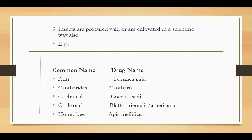Insects are procured from the wild or cultivated in scientific ways. Common name and drug name: Ants — drug name Formica rufa; Cantharis — drug name Cantharis; Pozemial — drug name Cantharis. Common name Cockroach: Cofrose — drug name Glata Orientalis and Blatta Americana. Common name Honeybee — drug name Apis Mellifera.